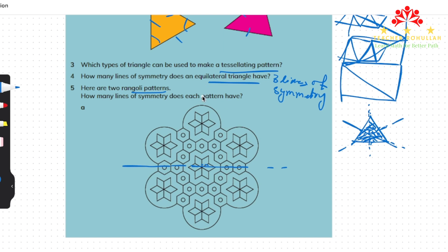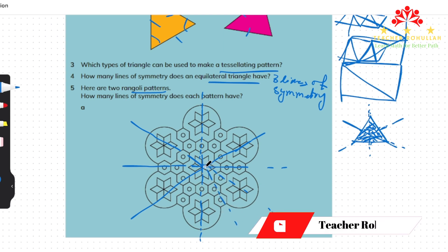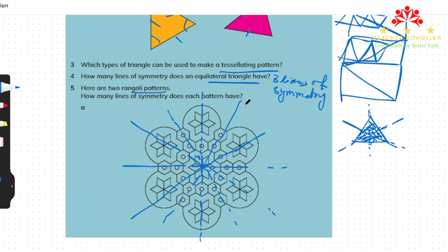If we draw a line from the bottom crossing through the center of the rangoli, this is also a line of symmetry because the shapes on both sides are exactly the same. Drawing lines from each corner through the center, each one is also a line of symmetry. From this corner, from this one, and from this point - each drawn line can be a line of symmetry.